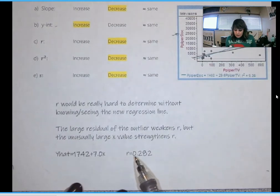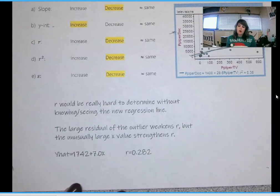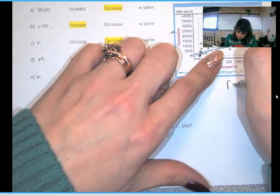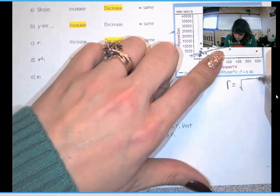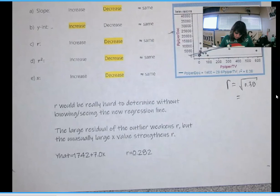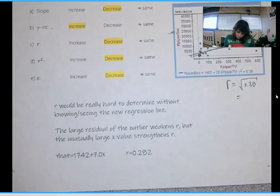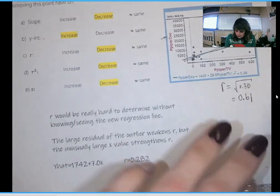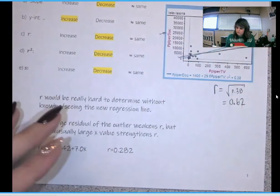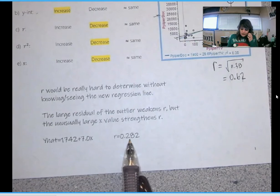Turns out that r decreases. Let me make sure that I'm not lying. They gave us r squared here. So we need to find the root of 0.38. Yeah, so this had a correlation of 0.62. So r did decrease.